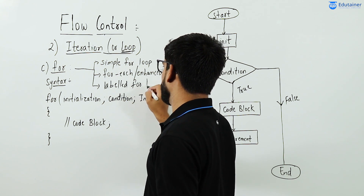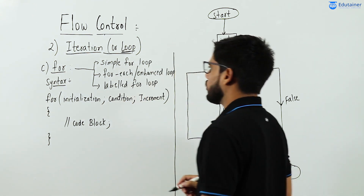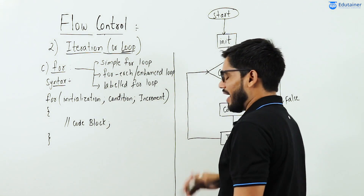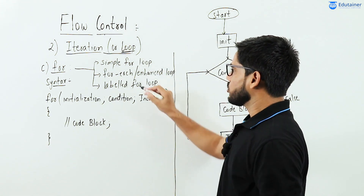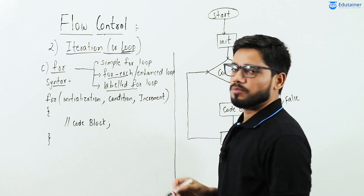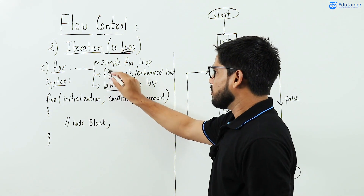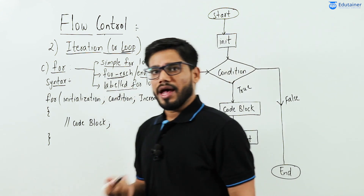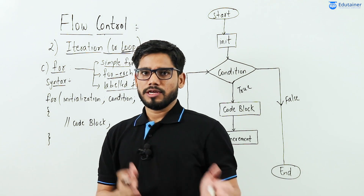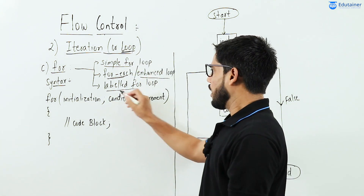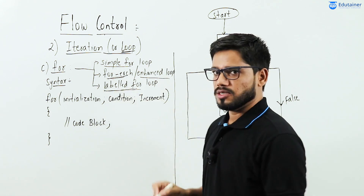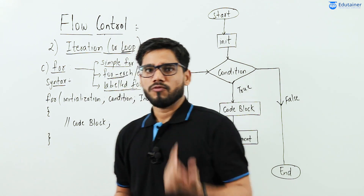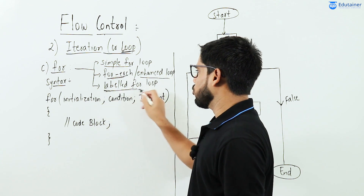Right now we are only studying about simple for loop. As and when required, we will use for each and labeled for loop as well. For each loop is where an array is provided as input to the for loop. Labeled for loop is generally used where nested for loops are involved — when one for loop is inside another, we label the for loop, so it's called a labeled for loop.